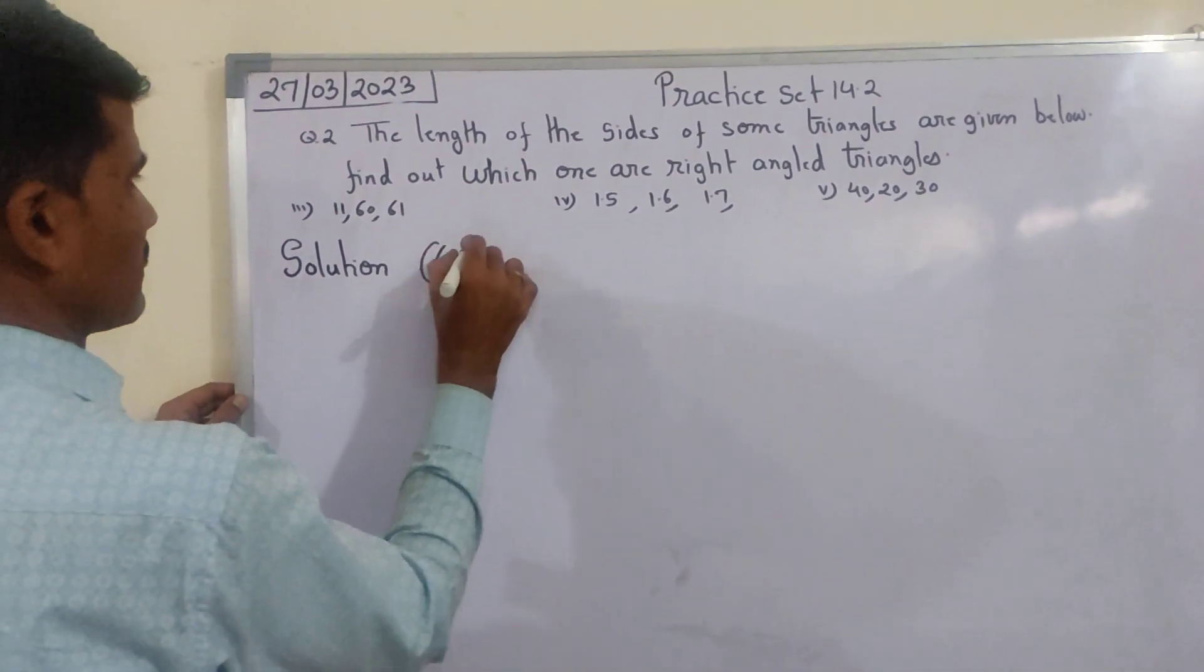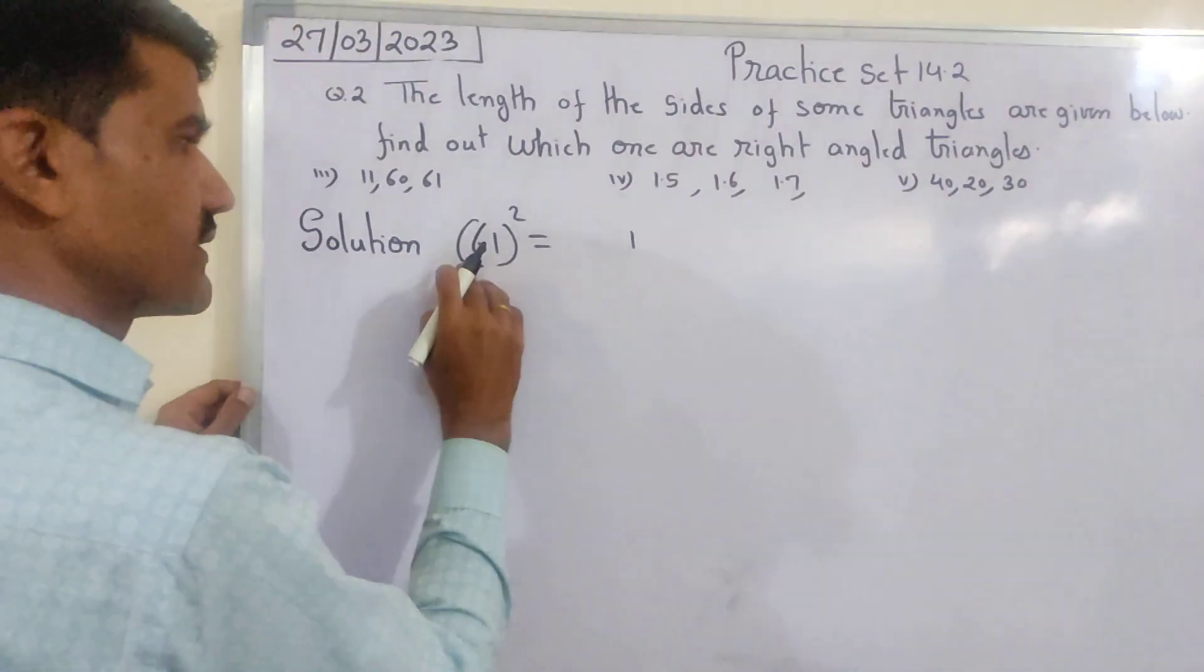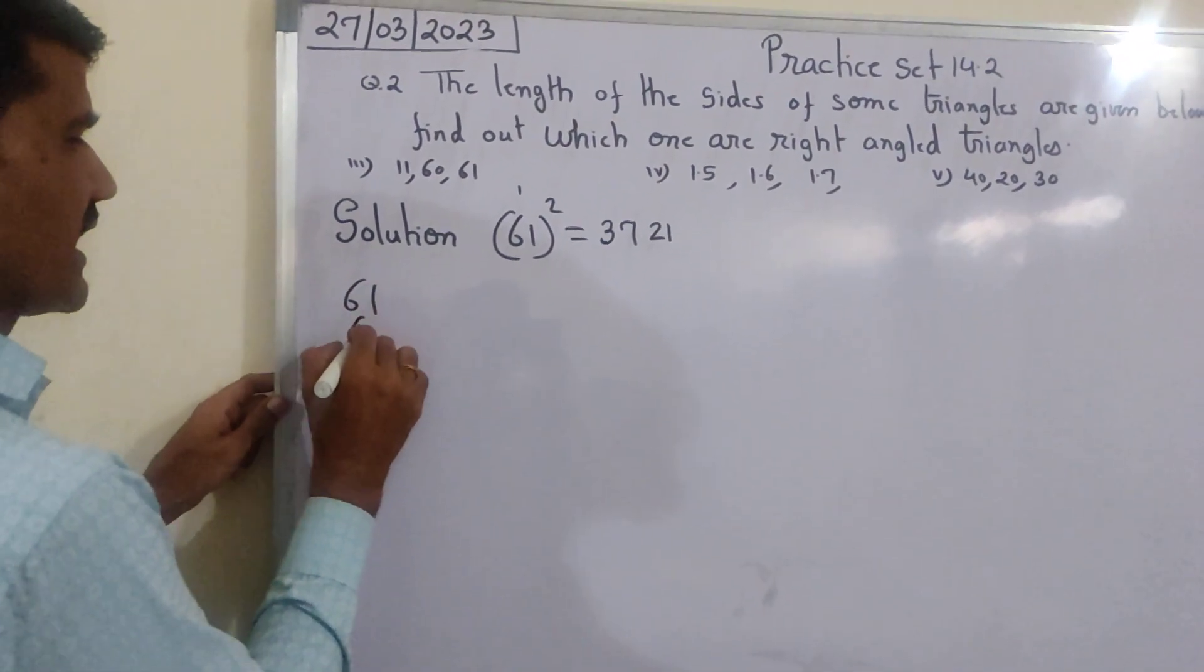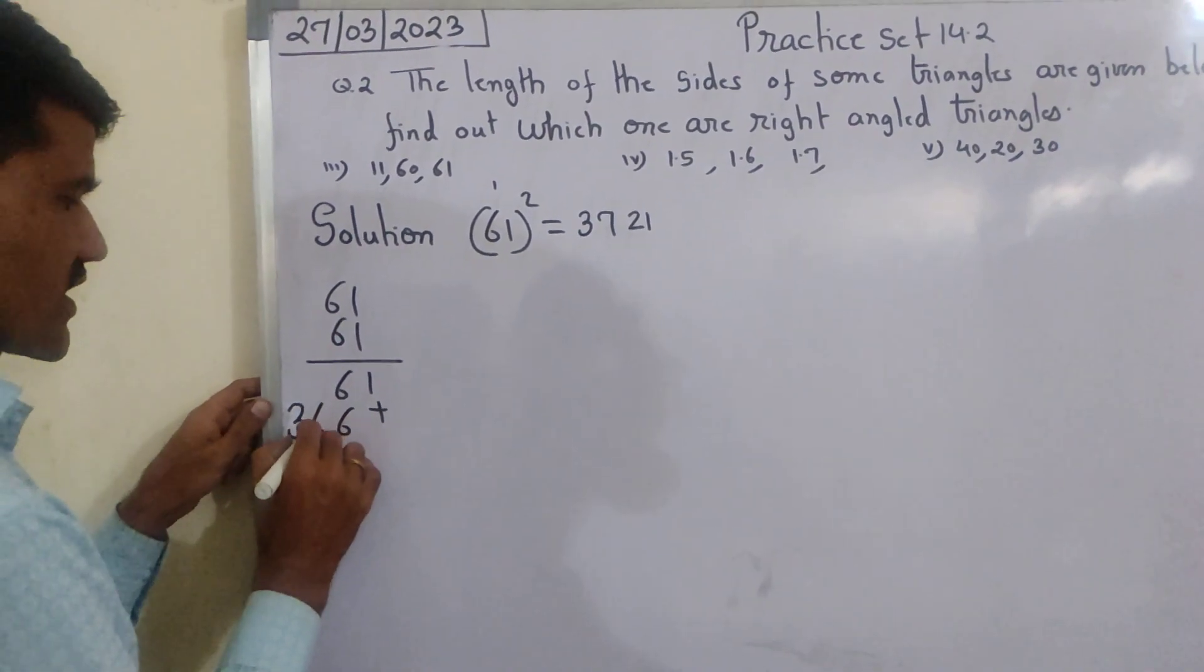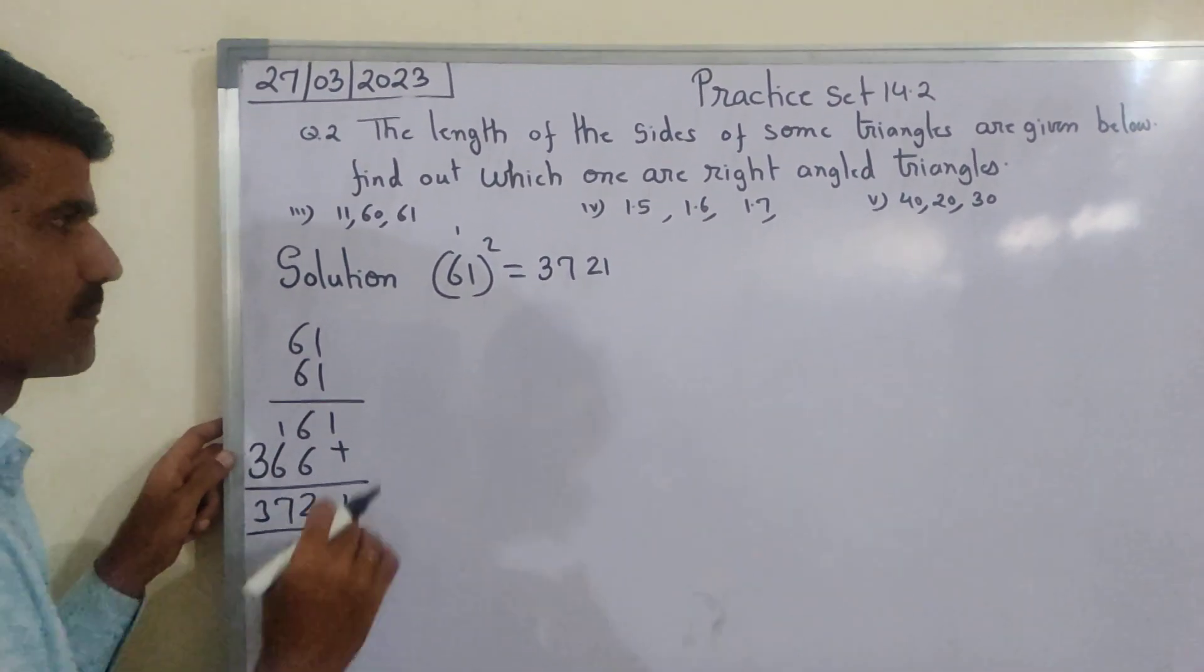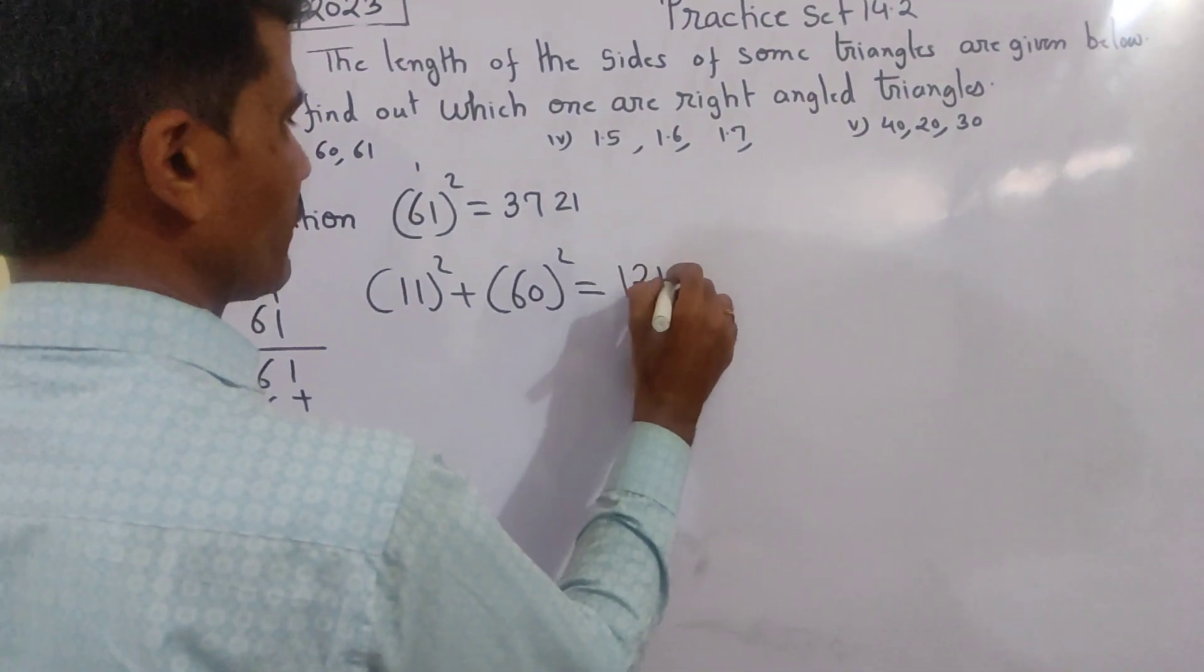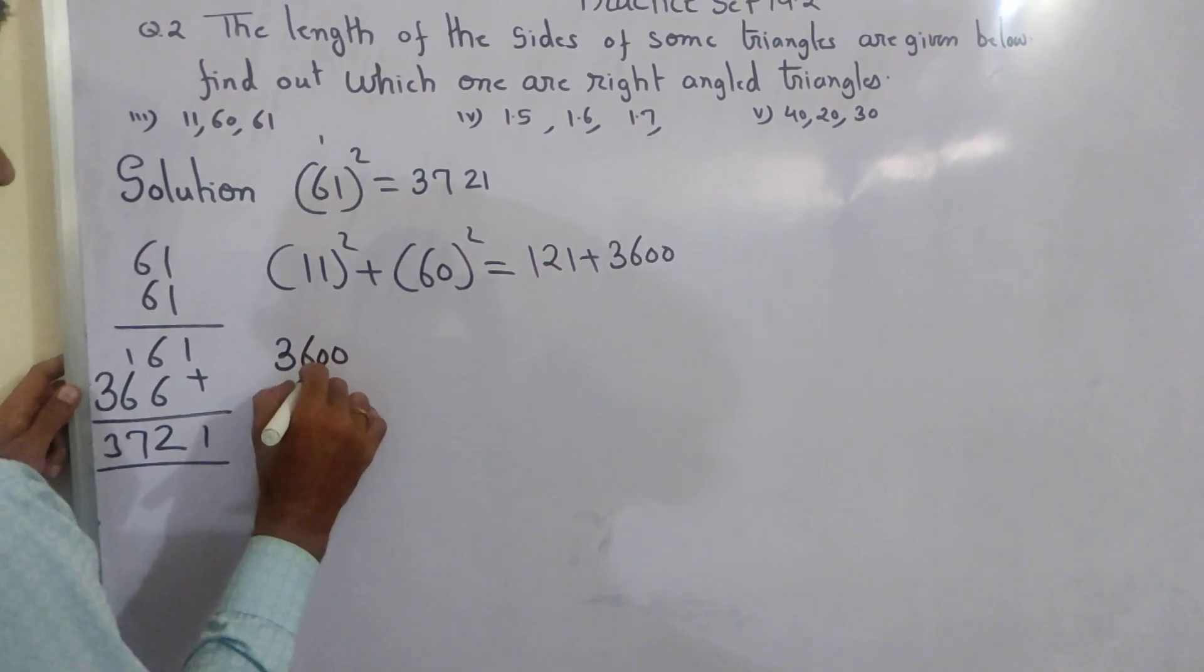Sab se bada number, 61 ka square. How to find: 1 square is 1, 1 into 6 is 6, uske double 12, 1 carry, 6 ka 36, 36 plus 1 is 37. The remaining two - 11 square plus 60 square. 11 ka square 121, 60 ka square 6 ka 36, toh kitna answer aaya 3600.